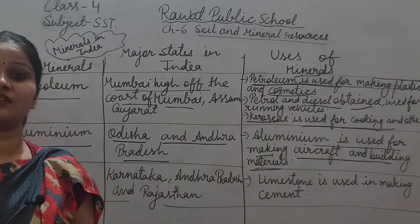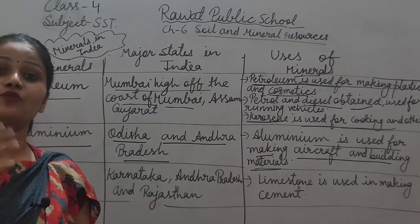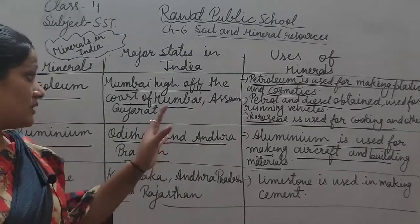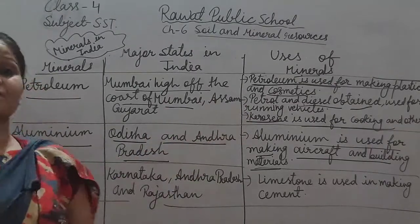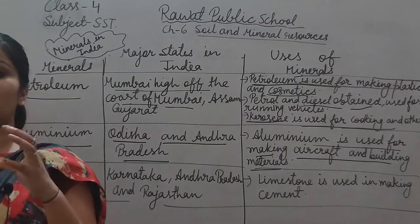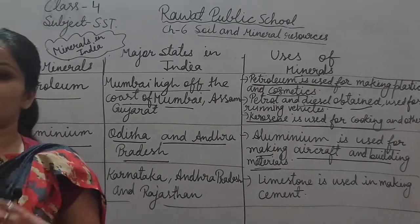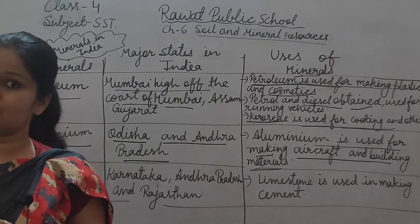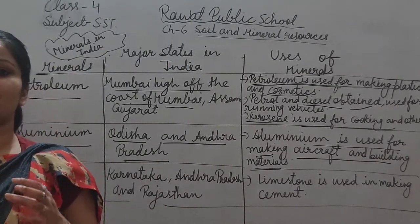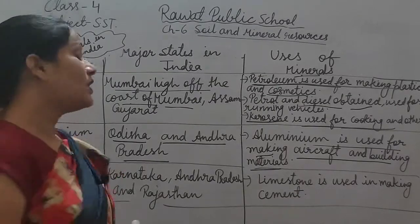You must have seen many utensils in the kitchen that are made of aluminium — for example, a pressure cooker. So aluminium is used for making aircraft, utensils, and building materials.